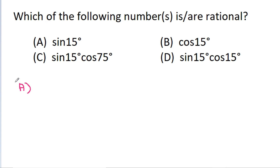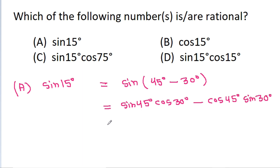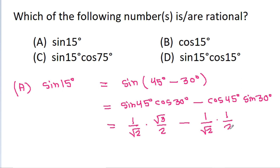Option A is sine 15 degrees. We can write sin(15°) as sin(45° - 30°), which equals sin 45° cos 30° minus cos 45° sin 30°. That gives us (1/√2)(√3/2) minus (1/√2)(1/2), which equals (√3 - 1) / (2√2). That is irrational.